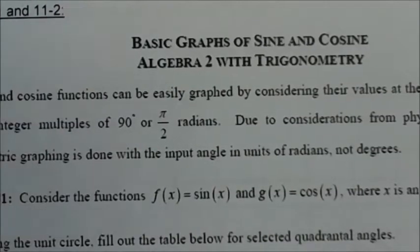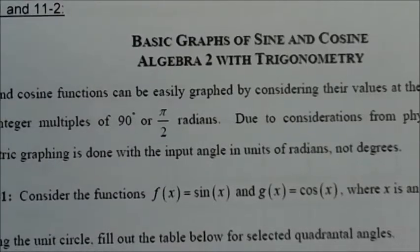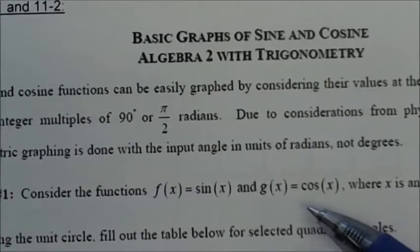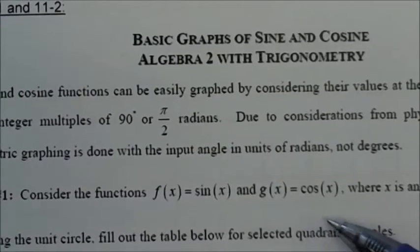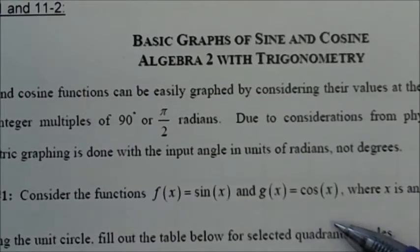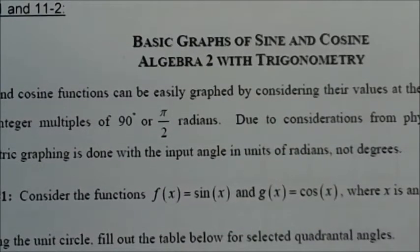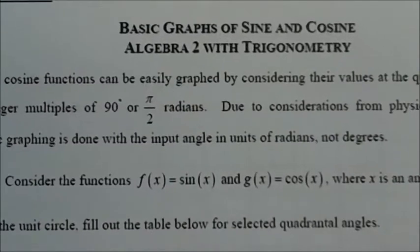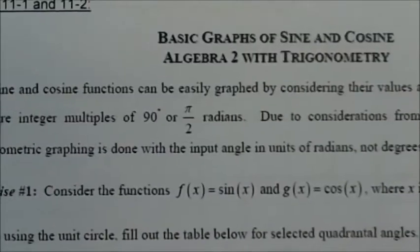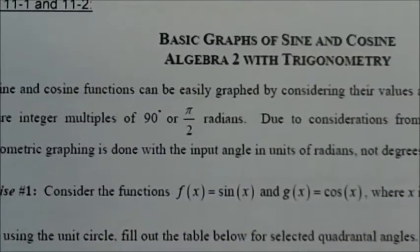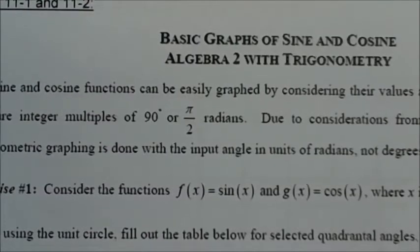We're going to consider the functions f(x) = sin x and g(x) = cos x, where x is an angle in radians. By using the unit circle, we're going to fill out the table below for the selected quadrantal angles.